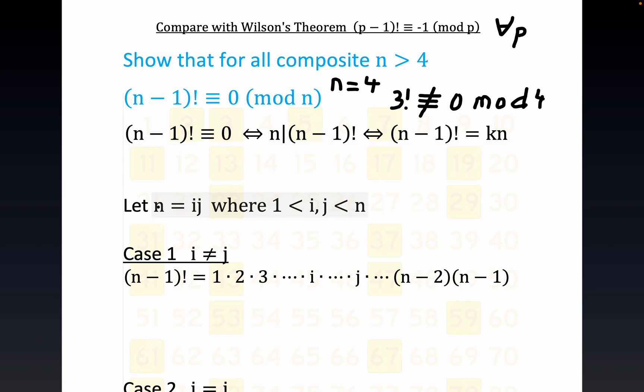Because we're assuming that n is composite, you're going to have at least one divisor. We don't know if i and j are distinct here, but you're going to have at least one divisor that's strictly between 1 and n.